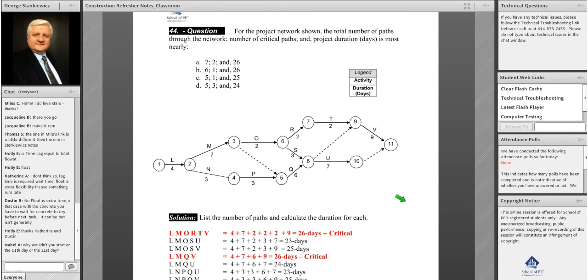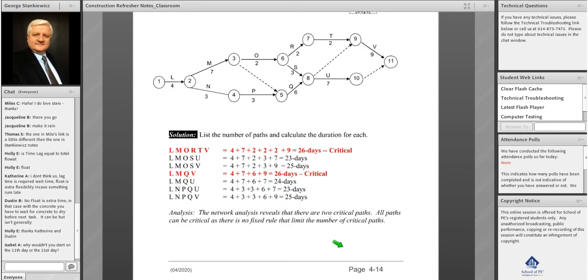Another simulation for the exam. Here they want to know the number of paths through the network, the number of critical paths, and the duration. So there's three things: the first is the number of paths, the second number is the number of critical paths, and what's the duration of the project.